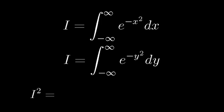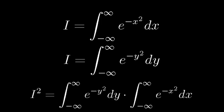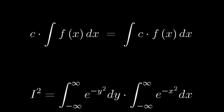On the left side, we have i squared. On the right side, we have the product of the two integrals. Hey, here's a cool trick. In general, a constant times the integral of a function is equal to the integral of the constant times the function.